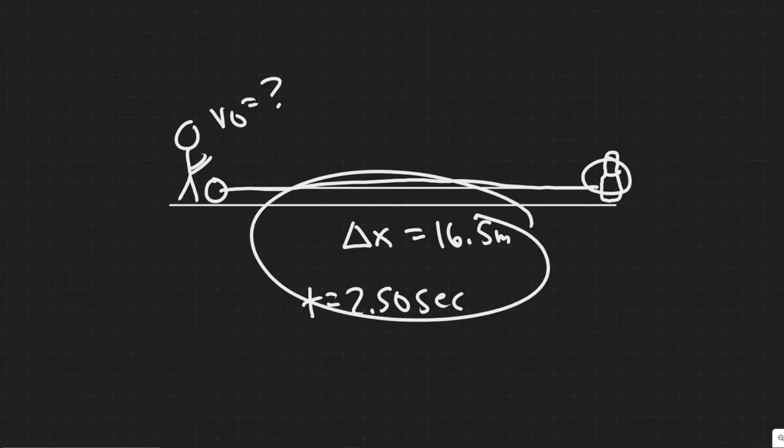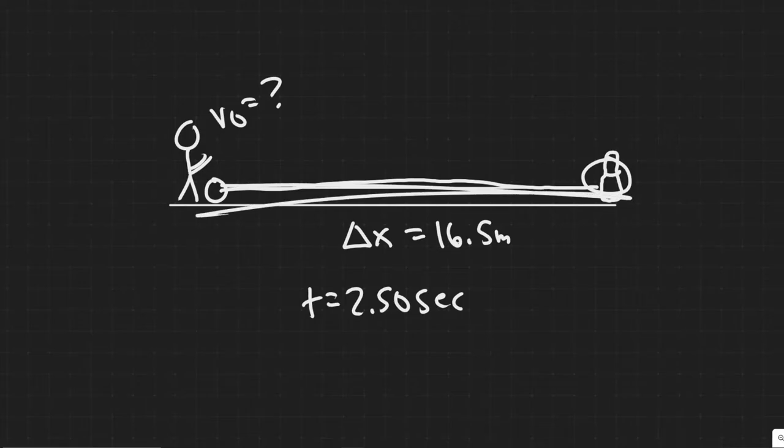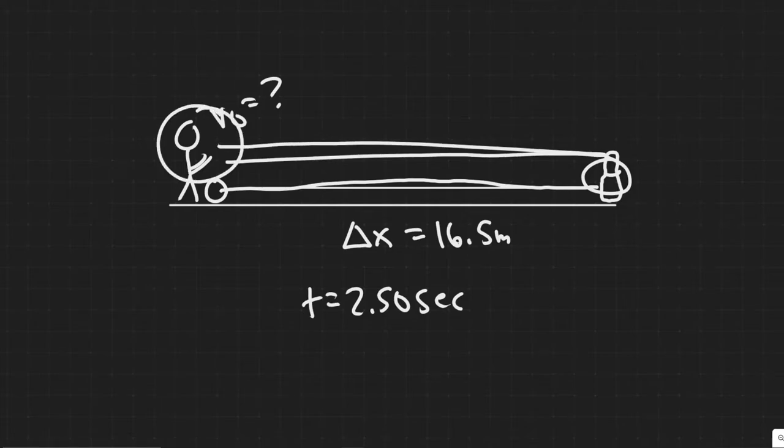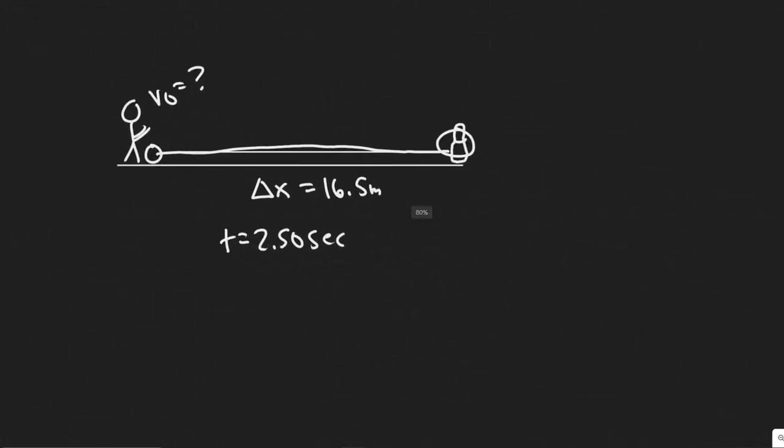We're also told the distance that this lane is, so 16.5 meters. So it's going to hit the pins, and then the sound is going to travel, and the bowler is going to hear it. And we know this time, from the time it takes from them bowling it to the sound reaching his ears, is going to take 2.5 seconds. So that's kind of what's going on. We're also given the speed of sound. So I'll call it Vs, it's equal to 340 meters per second.